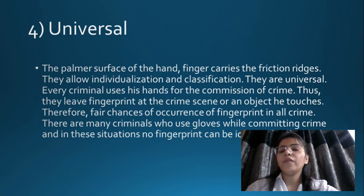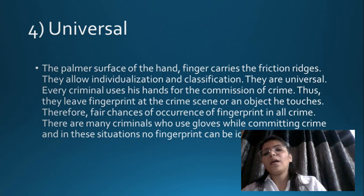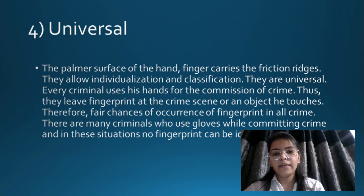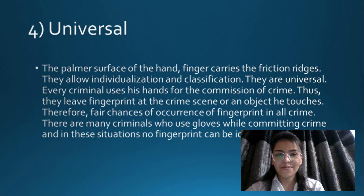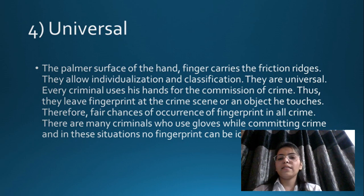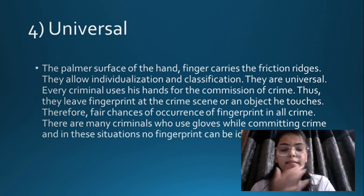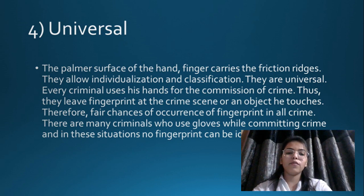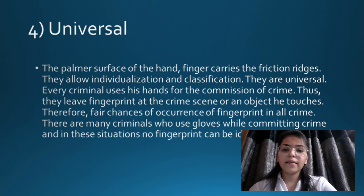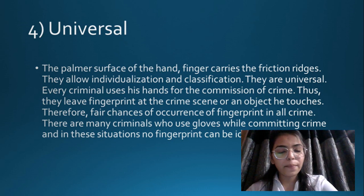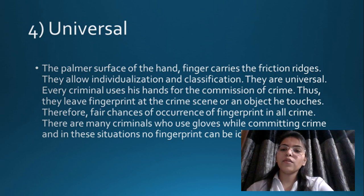According to fundamental principle four, the palmar surface of the hand and fingers carries friction ridges, which allow individualization and classification. This principle is universal — every criminal uses his hands in the commission of a crime, meaning they leave behind their fingerprints, giving fair chances of finding fingerprints at all crime scenes.